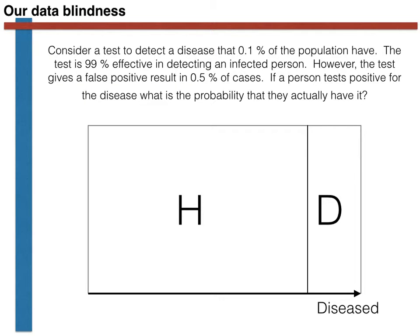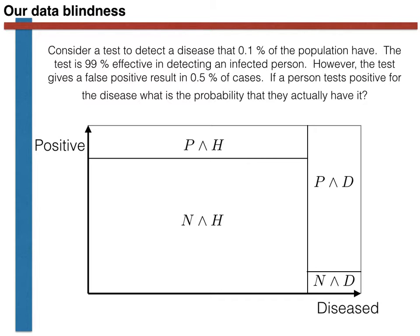Let's now introduce the test for the disease. Every person will fall into one of four categories. The majority will fall in the lower left: they will be healthy (H) and the test gives a negative result (N). Above that, labelled P and H, are those individuals for whom the test gave a false positive — the test said they have the disease despite being healthy. The top right, labelled P and D, contains people who have the disease and tested positive. The final box, N and D, is those unlucky individuals who have the disease but the test cannot detect it.